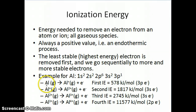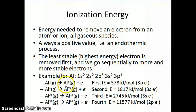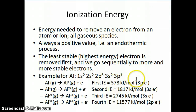The process is written as: aluminum atom (gas) → aluminum ion 1+ (gas) + electron. The energy needed for this process is the first ionization energy. For aluminum, this corresponds to 578 kilojoules per mole, and this corresponds to removal of the 3p electron.